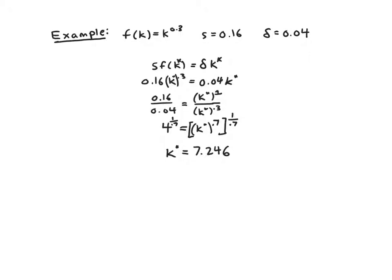It's worth noting that k* = 7.246 is the answer we'd expect on a test, but there is another solution: if you plug in 0 for both k's in the original equation, you get 0 = 0. So k* = 0 is technically also a steady state — but it's not interesting or useful. It just means that if you have no capital, you can't produce anything and will always have no capital. No real economy has zero capital, so we focus on the non-trivial steady state whenever solving for one.